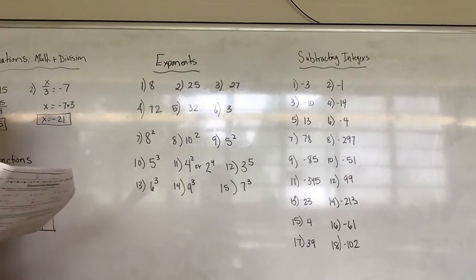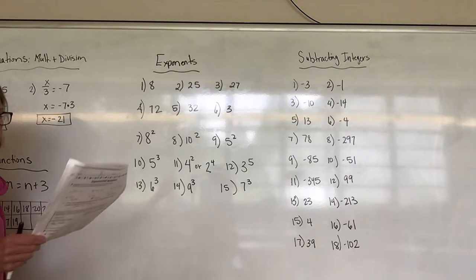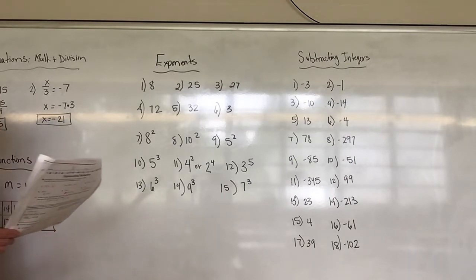Number 12 is 99, number 13 is 23, number 14 is negative 213.